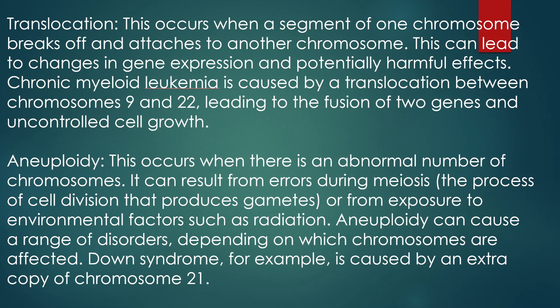The next one is Translocation. This occurs when a segment of one chromosome breaks off and attaches to another chromosome. This can lead to changes in gene expression and potentially harmful effects. Chronic myeloid leukemia is caused by a translocation between Chromosome 9 and 22, leading to the fusion of two genes and uncontrolled cell growth.